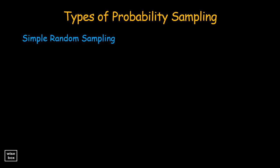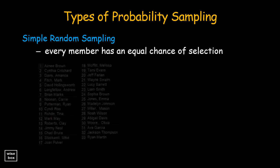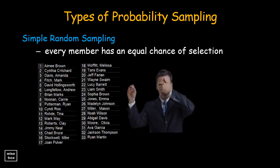Simple random sampling is a probability sampling in which every member of a study population has been given an equal chance of selection. For example, if you have a list of all the members of the population, you can't look at the list when choosing. You must avoid bias in selecting the samples.